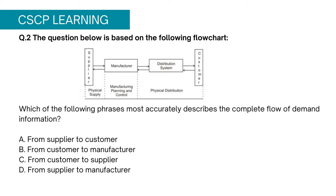Question 2: Which of the following phrases most accurately describes the complete flow of demand information? Option A, from supplier to customer; Option B, from customer to manufacturer; Option C, from customer to supplier; Option D, from customer to manufacturer. To answer this question, you should know that there are 2 kinds of flow in a supply chain: upstream and downstream.